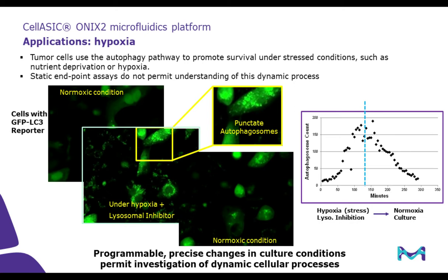Next, we will look at autophagosome formation under hypoxia using fluorescent lysosomal marker LC3. Under hypoxic conditions, cellular stress will induce formation of a punctate autophagosome, and this can be visualized and measured based on live cell imaging. Let's take a look at the movie.